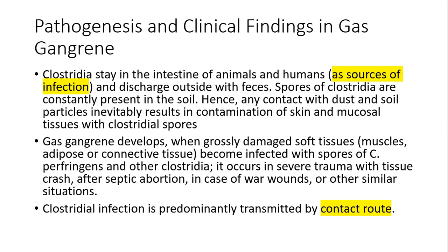Bacteria live in the gastrointestinal tract of animals like cows and horses. With feces they can be transmitted to the soil and start spore formation. In spore form, they can survive in the soil for a very long time — about 100 years. Gas gangrene develops when closely damaged soft tissue, muscle, adipose, or connective tissue becomes infected with spores of Clostridium perfringens or other clostridia. It occurs in severe traumas with tissue crush, after septic abortion, or in cases of gunshot wounds and other similar situations.